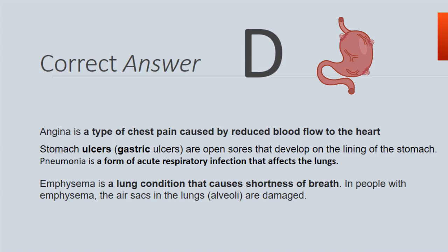The correct answer is D. Angina is a type of chest pain caused by reduced blood flow to the heart. Stomach ulcers, or gastric ulcers, are open sores that develop on the lining of the stomach. Pneumonia is a form of acute respiratory infection that affects the lungs. Emphysema is a lung condition that causes shortness of breath; in people with emphysema, the air sacs in the lungs, alveoli, are damaged.